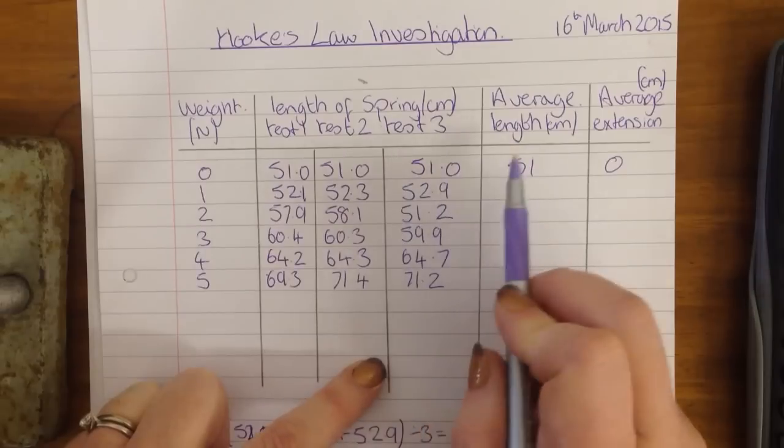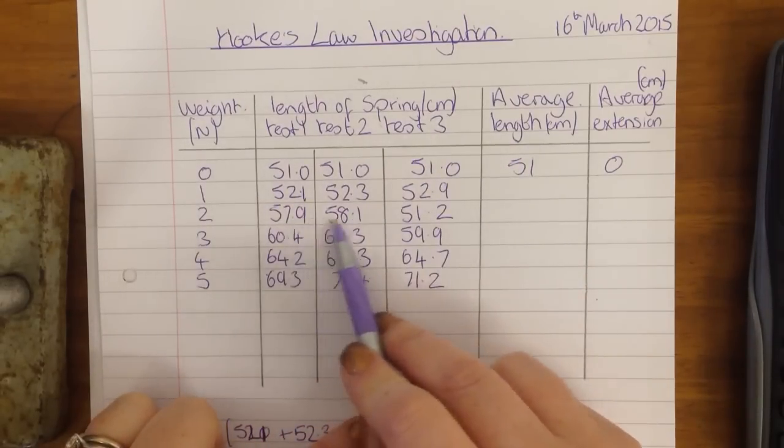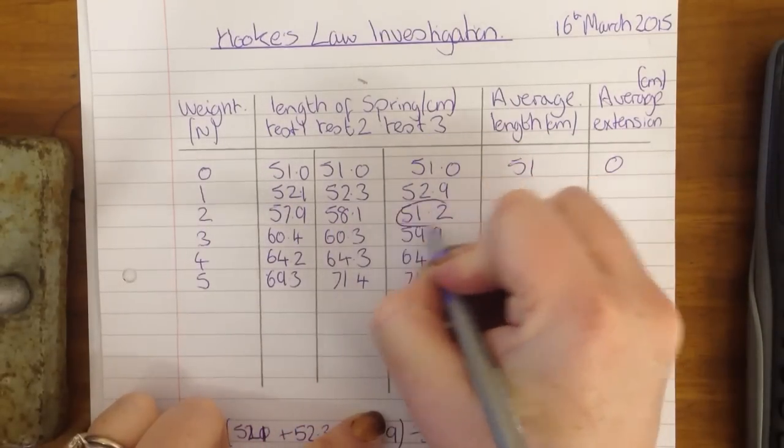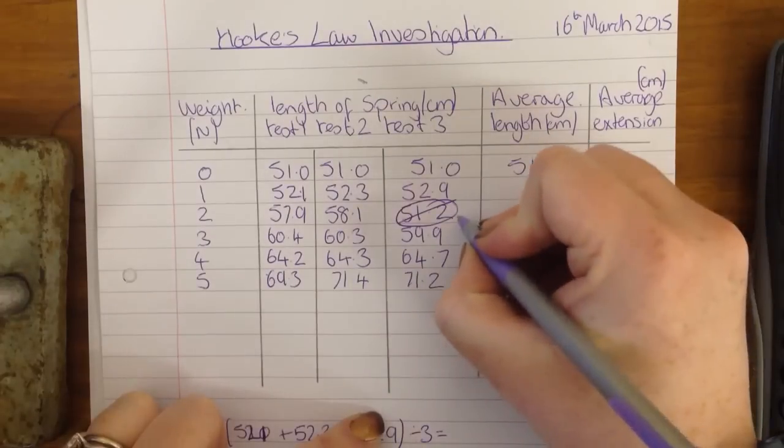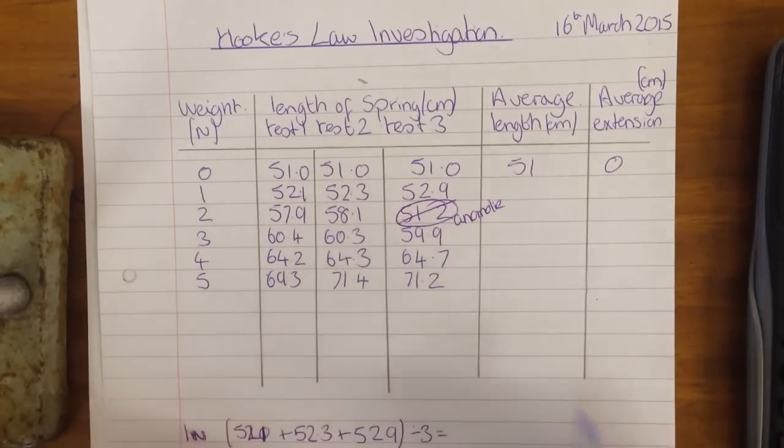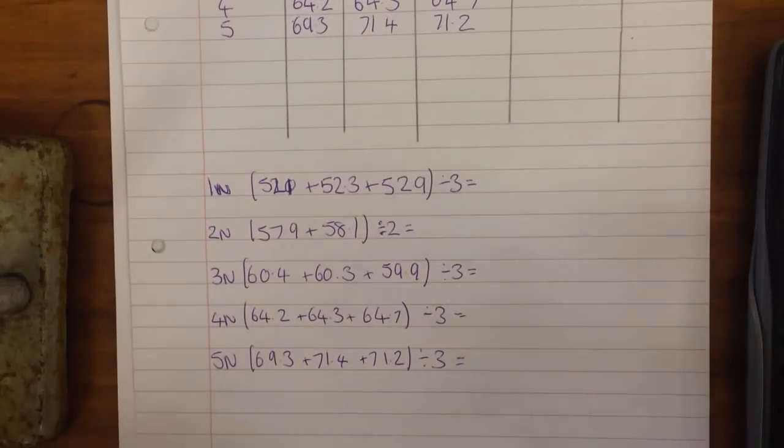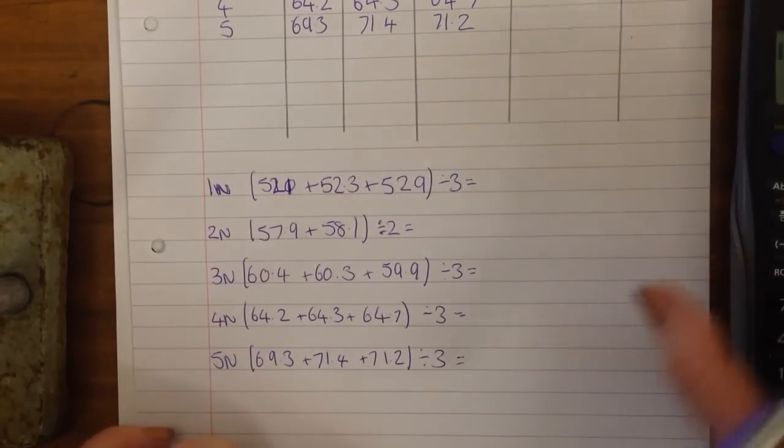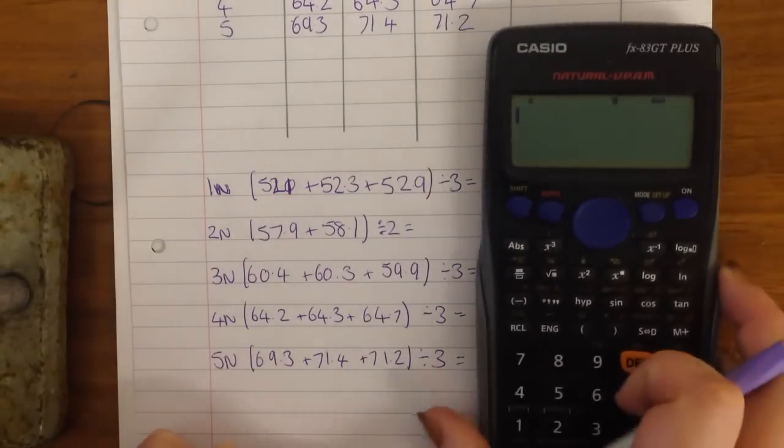So 51, that's my unextended spring, they're all fine. These are all close. This one is not close. I'm going to put a circle through it and put a line through it and label it as an anomaly and all the rest of them look pretty fine. So when we work out an average, what we do is we add our results together and divide by the number of results.